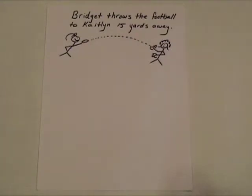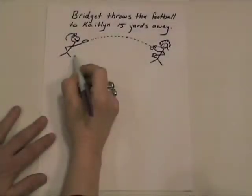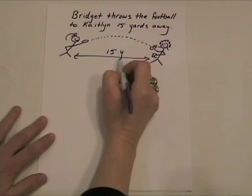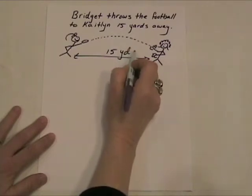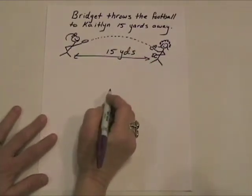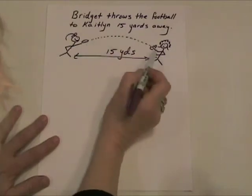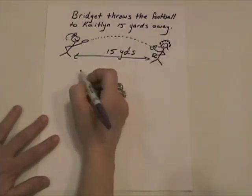We have an equation describing a situation where two girls are playing football. Bridget throws the football to Kaitlyn, and Kaitlyn is 15 yards away from Bridget. The distance here is 15 yards. The equation of the path of this ball can be described like this.